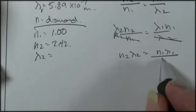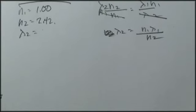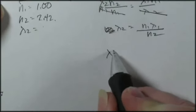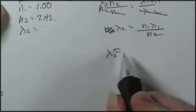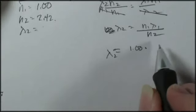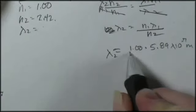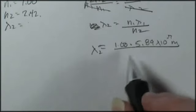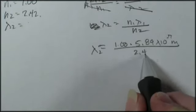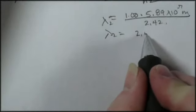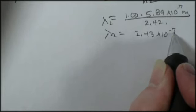What am I looking for? Lambda 2. So I divide both sides by N2. I've got lambda 2 is equal to N1 lambda 1 divided by N2. Now I plug into my equation. Lambda 2 equals 1.00 times 5.89 times 10 to the negative 7 meters, divided by 2.42. And I come up with a lambda 2 equal to 2.43 times 10 to the negative 7 meters.